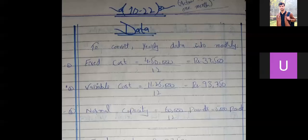You have to do the same job as in the previous question, converting yearly data into monthly. Fixed cost of Rs. 4,50,000 divided by 12 gives Rs. 37,500. Variable cost of Rs. 11,25,000 divided by 12 gives Rs. 93,750. Normal capacity of 60,000 pounds divided by 12 gives 5,000 pounds.